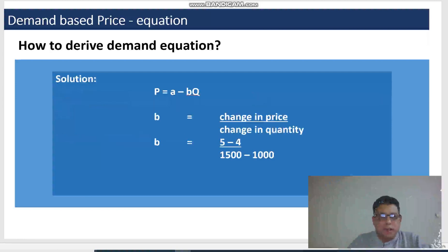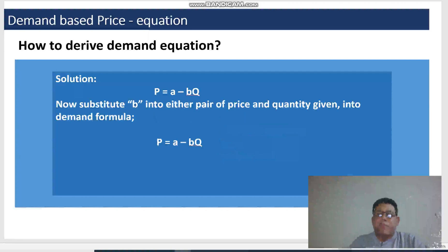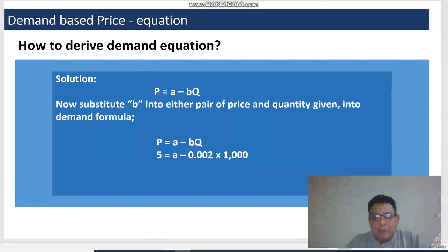Going back to the slide, P equals to A minus BQ. I'm going to substitute the B value into the first combination when the price was 5 and the quantity was 1000, and then 0.002. So P equals to A minus BQ, and then of course you just need to rearrange and play around with the equation, moving things from one side to the other. We are going to get an A value. And remember, when you move numbers from one side of the equation to the other side of the equation, don't forget to change the signs.